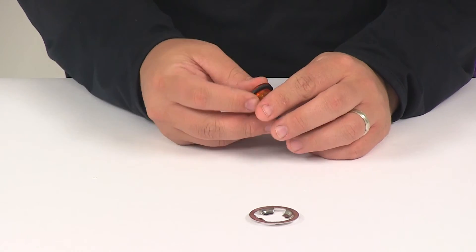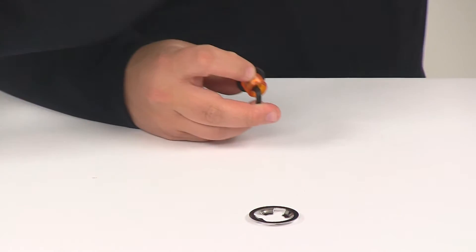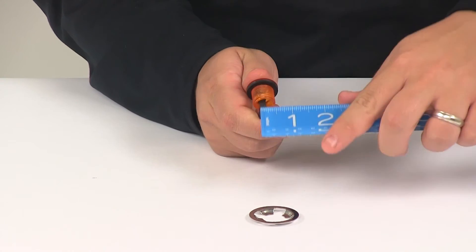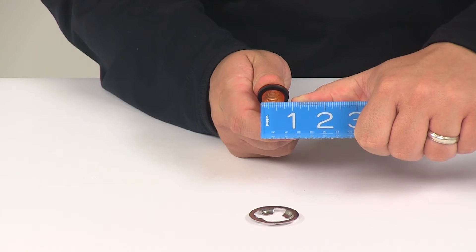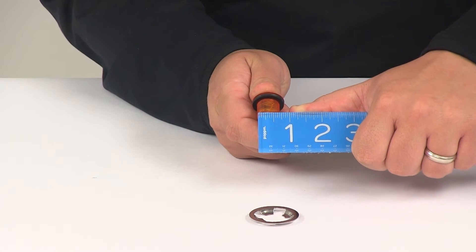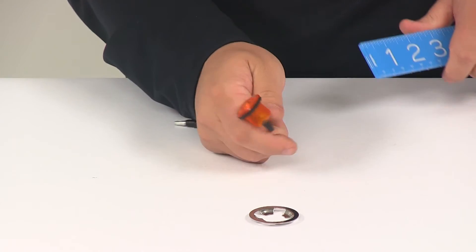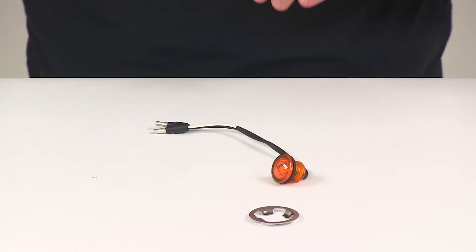If we take a measurement of this area right here, that'll tell us the size of the hole we need at the mounting location. Looks like that's going to measure right around three-quarters of an inch, so a three-quarter inch diameter hole is needed at the mounting location.